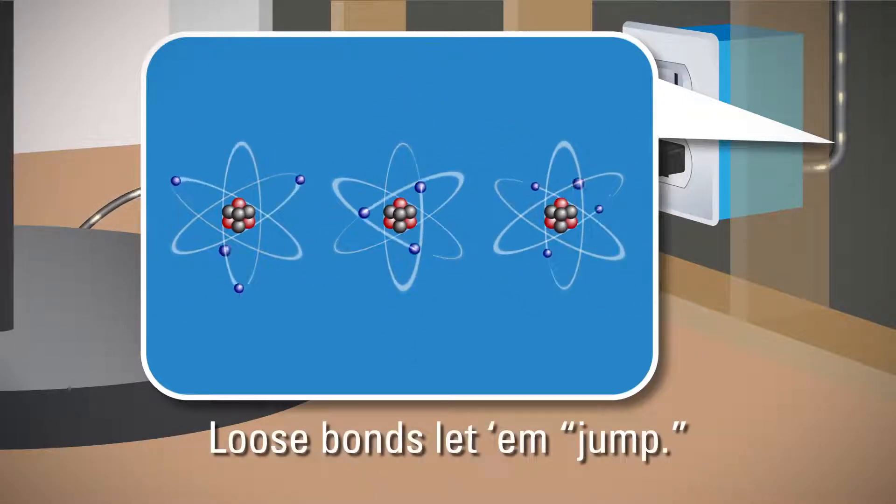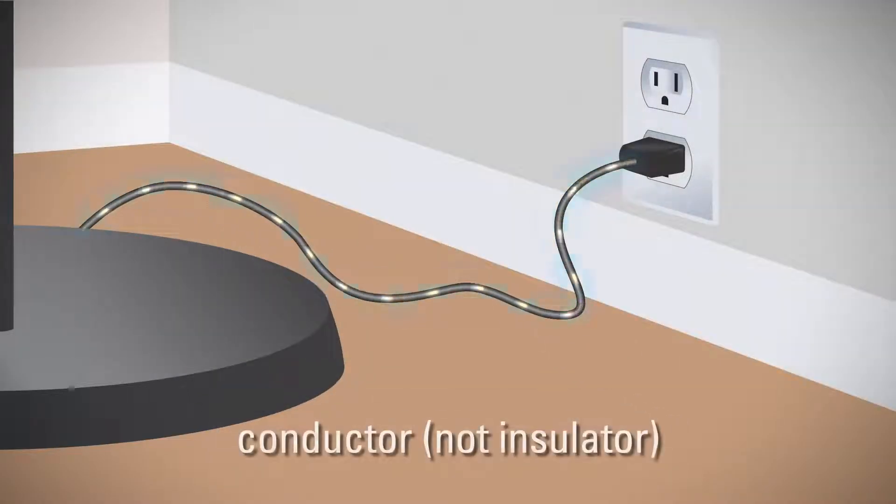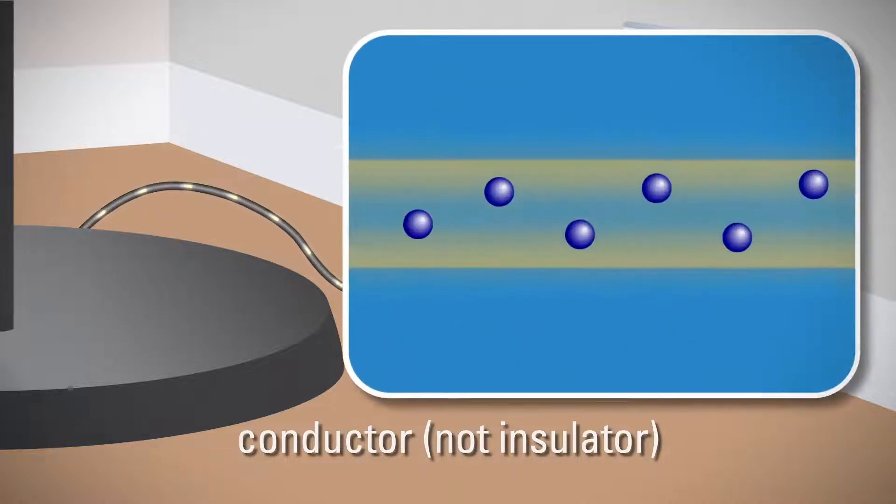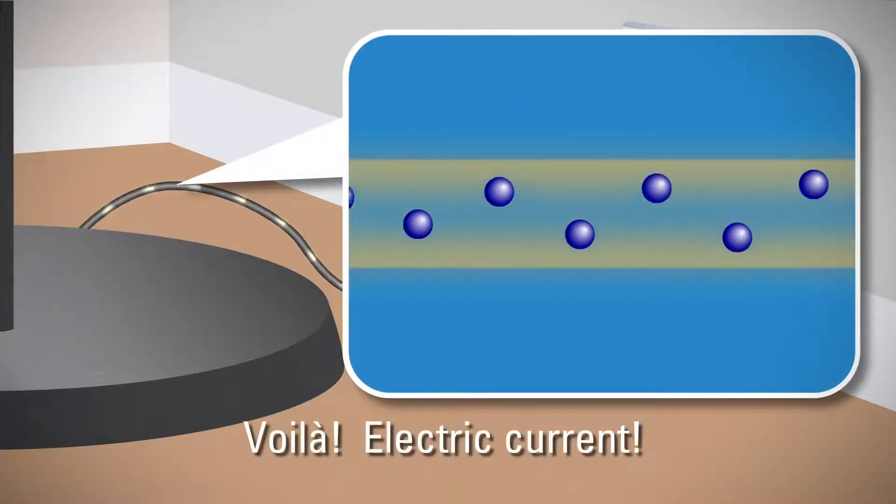Here's how it works. Electrons jump from atom to atom. Then, with a material like copper wire acting as a conductor, these charge carriers go with the flow, creating an electric current. It's like a conga line of electrons.